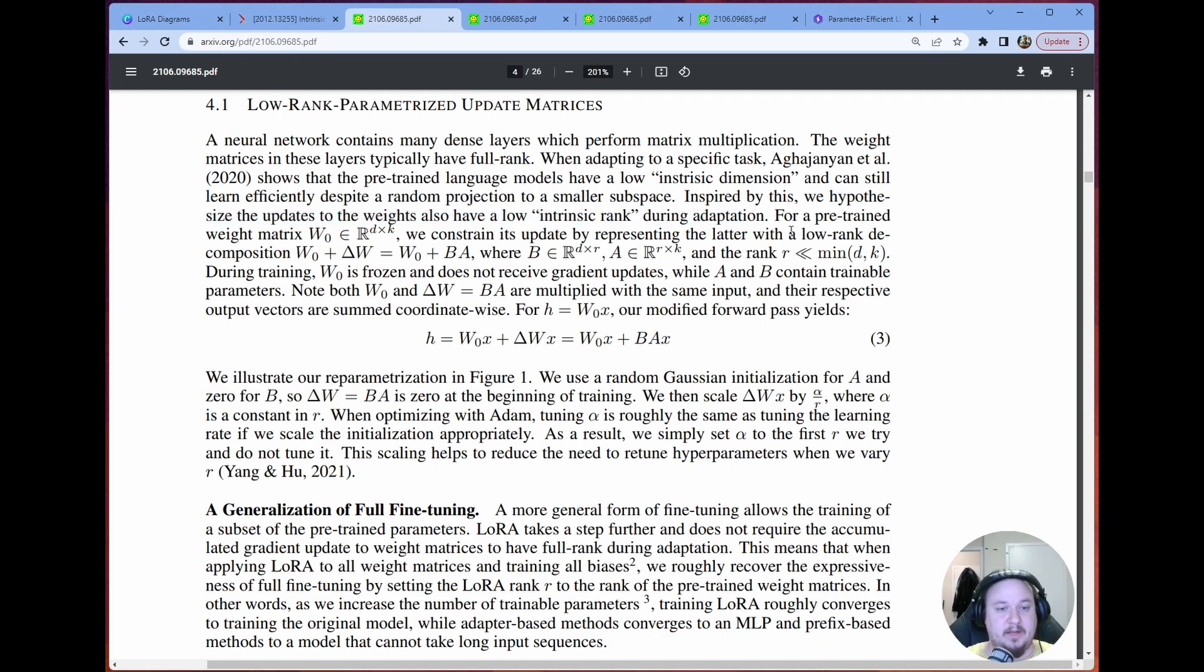So we want the product of this to be this essentially. The key insight here is that these matrices, WA and WB can be much smaller than the original matrix, but be the same thing, represent the same thing. So in that case, we have this A by R matrix and this R by B matrix, and that gives us these smaller matrices that we can use to represent that Delta W.